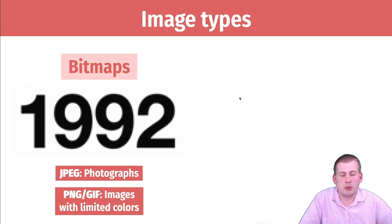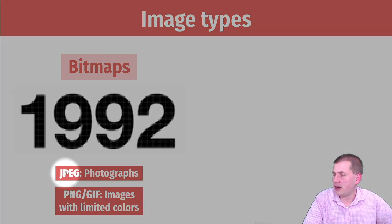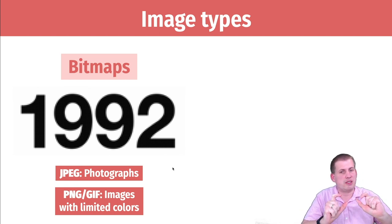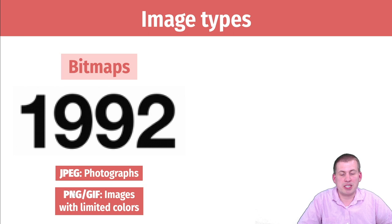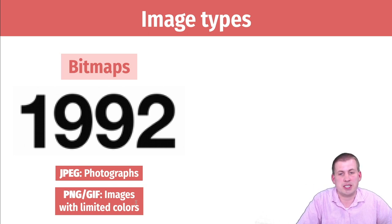When you have a bitmap image, it saves an electronic record of each of those boxes onto your computer. A JPEG, which you're familiar with from photographs, is one way of storing these bitmap images and all of the pixel information. You also have PNG images or GIFs — these are good for images that have limited numbers of colors, like graphs you create in R or in Excel. You don't want to use JPEGs for those, and we'll show some examples of that.